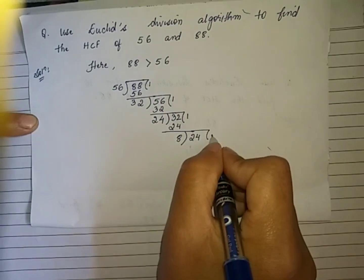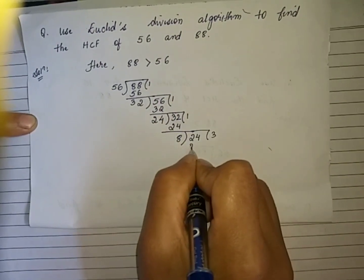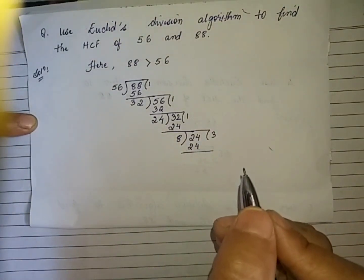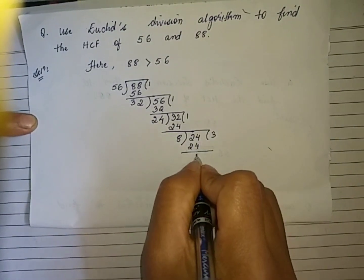8 into 3, we get 24. So what will be our remainder? Our remainder is 0.